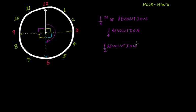Finally, if the hour hand moves from 9 to 12, it takes one more right angle turn. This time it is a total of four right angle turns — one, two, three, and four. Four right angle turns make one complete angle, or one rotation, or one revolution.